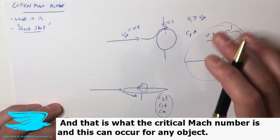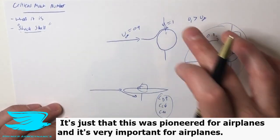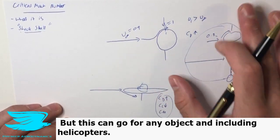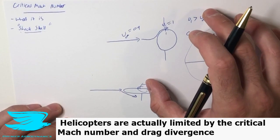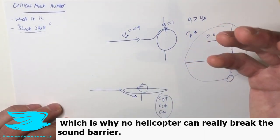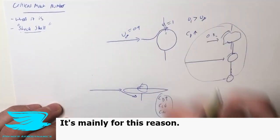And this can occur for any object, it's just that this was pioneered for airplanes, and it's very important for airplanes, but this can go for any object including helicopters. Helicopters are actually limited by the critical Mach number and drag divergence, which is why no helicopter can really break the sound barrier.